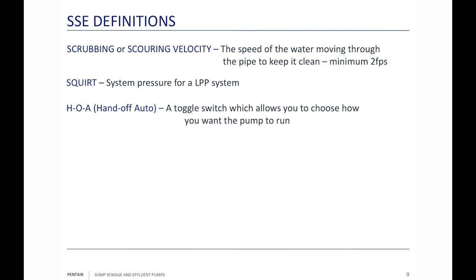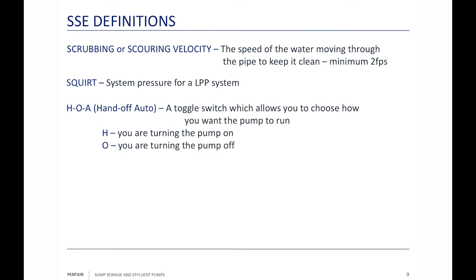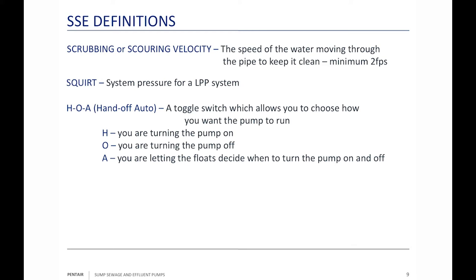HOA stands for Hand Off Auto — a toggle switch built into a control panel used to test the pump. Hand means I'm going to turn the pump on manually; I'm not letting the automatic system do that, which also means I have to turn it off. Off means I'm turning it off. Auto means I'm allowing the float system to decide when to turn the pump on and off.